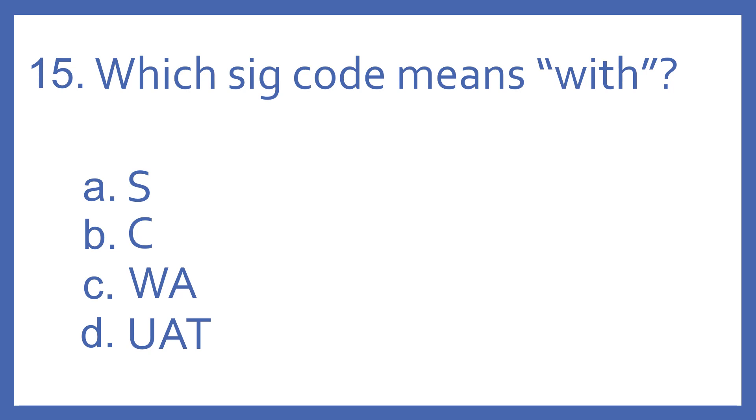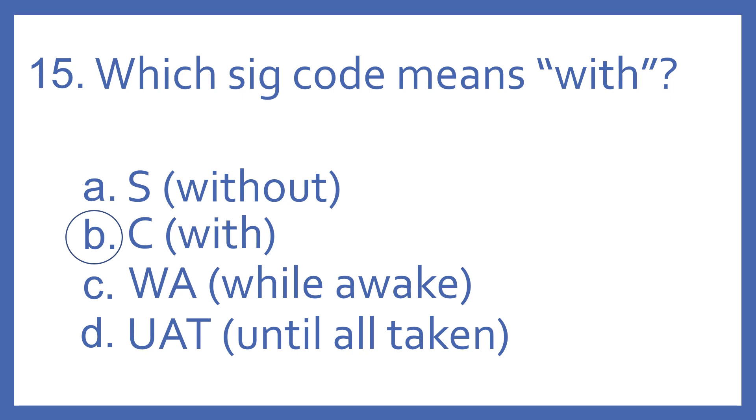Number 15, which SIG code means with? A, S, B, C, C, WA. Or D, UAT. And the answer is B, C means with. S means without. WA means while awake. And UAT means until all taken.